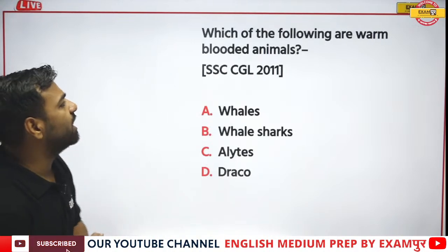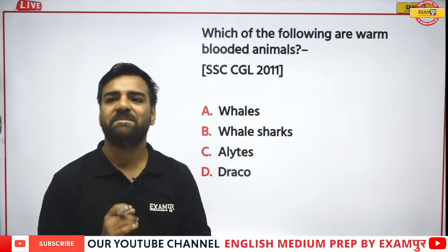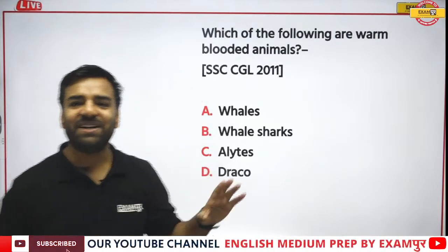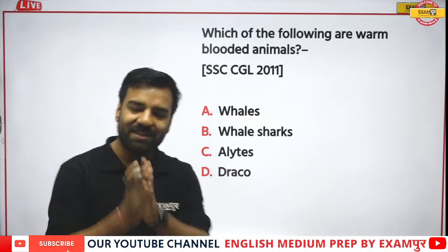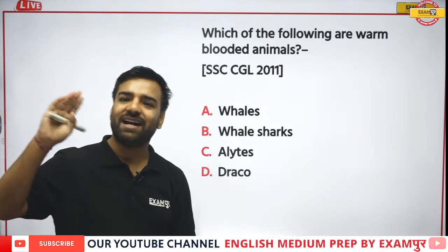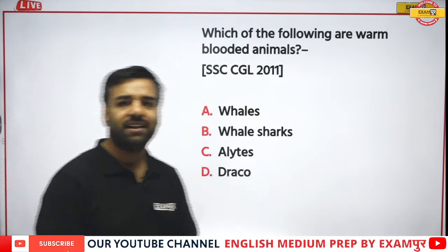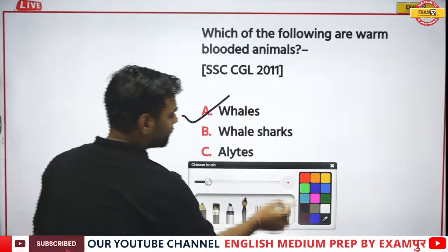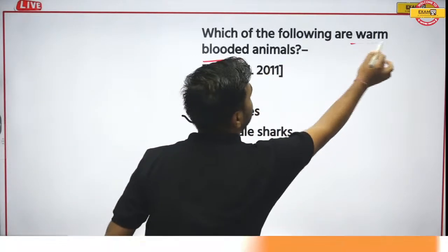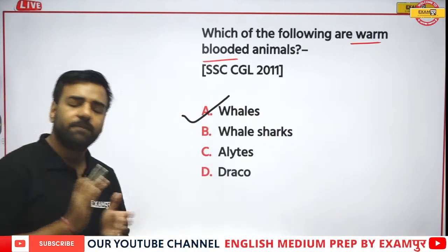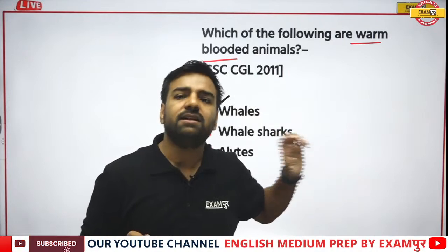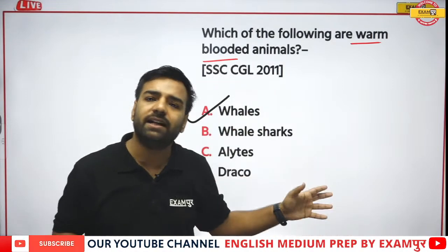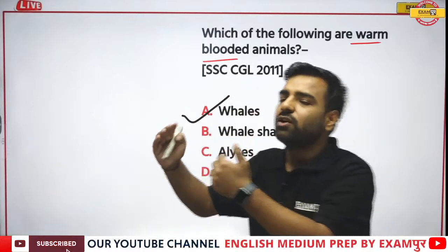This question is from CGL 2011. The correct answer is whales. Warm-blooded animals — including humans and whales — are able to maintain their body temperature regardless of the surroundings. Cold-blooded animals, by contrast, take on the temperature of their surroundings.